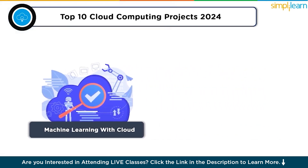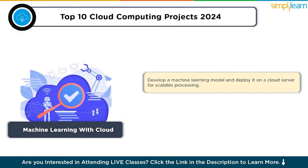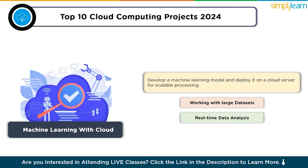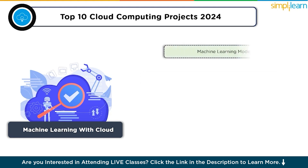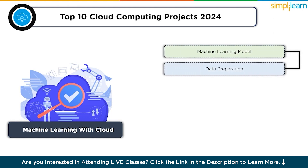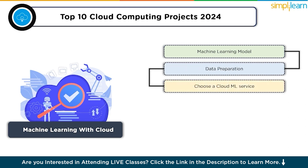Develop a machine learning model and deploy it on a cloud server for scalable processing. This involves working with large datasets and real-time data analysis. Develop your model using libraries like TensorFlow or scikit-learn, prepare and clean the data, then choose a cloud machine learning service such as AWS SageMaker or Google AI Platform.